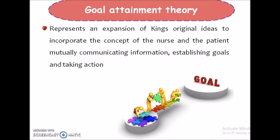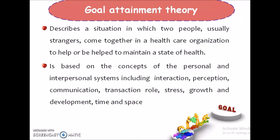Coming to the goal attainment theory. Goal attainment theory represents an expansion of King's original ideas to incorporate the concept of the nurse and the patient when they are mutually communicating information, establishing goals and taking action to achieve the goal. It describes a situation in which two people — usually strangers — come together in a healthcare organization to help or to be helped to maintain a state of health. This theory is based on the concepts of personal and interpersonal systems, which includes interaction, perception, communication, transaction, role, stress, growth and development, time and space.